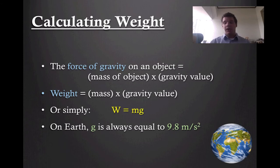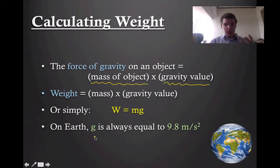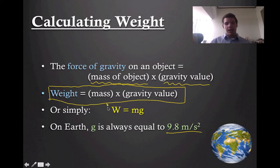If we were to try and calculate weight, so we want to figure out what that force is going to be — this is going to be important later once we get into defining GPE. If we want to calculate the weight, we want to find out what the force of gravity is on that object. So what we do is we take the mass of the object and multiply it by this constant called the gravity value, or little g. On Earth, little g is always going to be 9.8 meters per second squared. This could change if you go to another planet or the moon, but for most problems we're going to stick with 9.8. So in simpler terms, the equation is: W equals m times g.